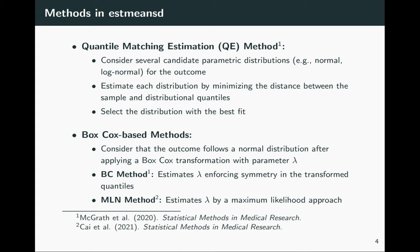A couple of other approaches are based on a Box-Cox transformation, essentially considering that the outcome is normally distributed after applying a suitable Box-Cox transformation, which can help accommodate skew distributions. The BC method estimates the lambda parameter governing the transformation by enforcing a type of symmetry in the transformed quantiles. A related approach, the MLN method, estimates lambda by maximum likelihood and was developed very shortly after the BC method.